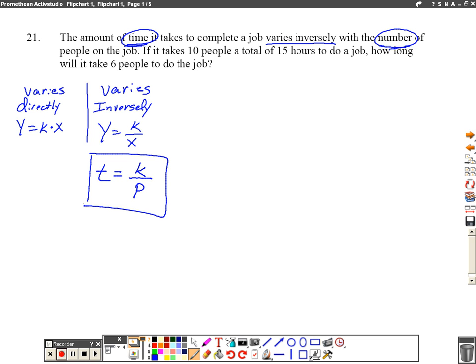The second sentence says, if it takes ten people a total of fifteen hours. Well, I've got ten people and fifteen hours, so I'm going to need to plug those into this equation. Ten people is going to go in for people. And my ten is going to be down here and fifteen hours, that's definitely a time, so that's going to be here.